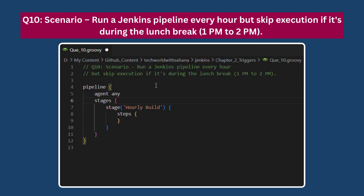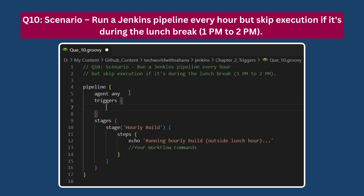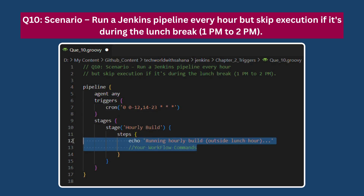Next automation: Run a Jenkins pipeline every hour but skip execution during the lunch break — 1pm to 2pm. In this scenario, we want to skip running the build during the lunch hour but can run again at 2pm after lunch ends. To achieve this, we use the triggers block with a cron expression that specifies the hours to run: '0 0-12,14-23 * * *'. This means the build will run every hour from midnight to noon, then skip 1pm, and run again from 2pm to 11pm — so the build does not run during the 1pm lunch break.